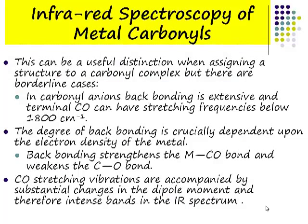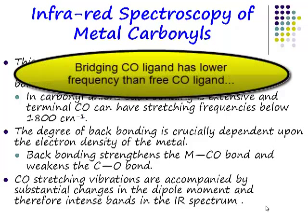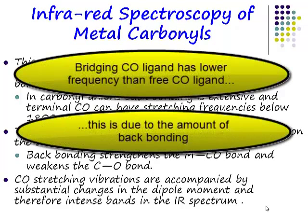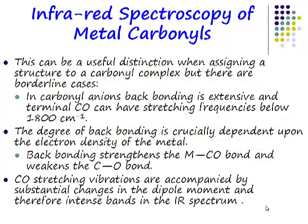If you have a carbonyl ligand which is bridging between more than one transition metal centre, then it will have a lower frequency because it's experiencing more backbonding. But if you have a carbonyl ligand bonded to a single transition metal centre, you can vary the amount of backbonding from that centre.